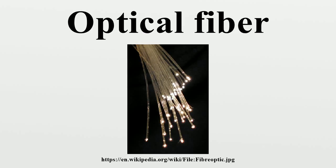NASA used fiber optics in the television cameras sent to the moon. At the time, the use in the cameras was classified confidential, and only those with sufficient security clearance were permitted to handle the cameras. The crucial attenuation limit of 20 decibels per kilometer was first achieved in 1970 by researchers Robert D. Maurer, Donald Keck, Peter C. Schultz, and Frank Zimar, working for American glassmaker Corning Glass Works. They demonstrated a fiber with 17 decibels per kilometer attenuation by doping silica glass with titanium, and a few years later produced a fiber with only 4 decibels per kilometer attenuation using germanium dioxide as the dopant. Such low attenuation ushered in the era of optical fiber telecommunication.